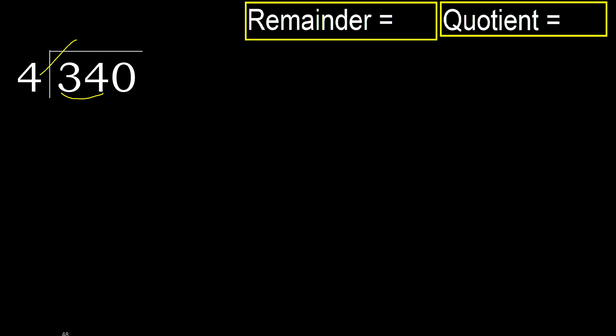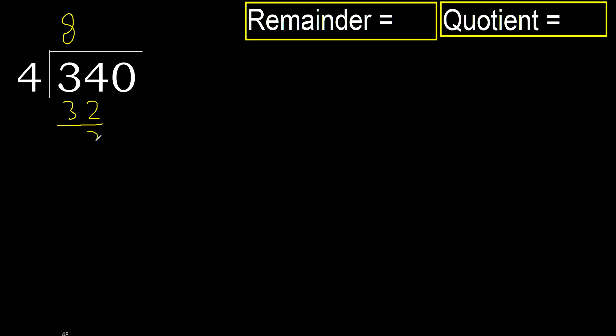4 multiplied by which number is nearest to 34 but not greater? 4 multiplied by 9 is 36 — 36 is greater. 4 multiplied by 8 is 32 — 32 is not greater. Subtract, remainder is 2.